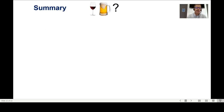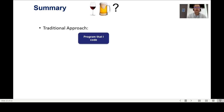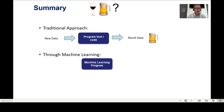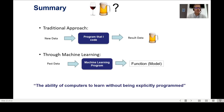As a summary: in the traditional approach, with no machine learning, I code the intelligence, code the knowledge, must be a business expert, give new data, and get results. Through machine learning, I use an algorithm, give it past good data, obtain a function or model, and use that model to predict. This is why we say computers learn without being explicitly programmed — the algorithm is already built, I use it, I give data, and I get a model.